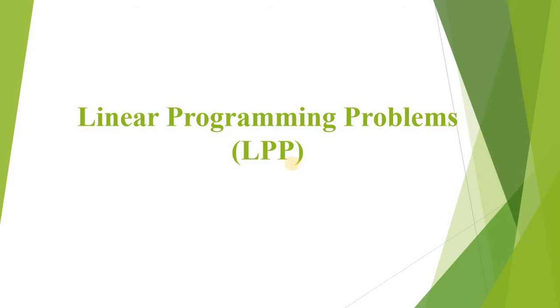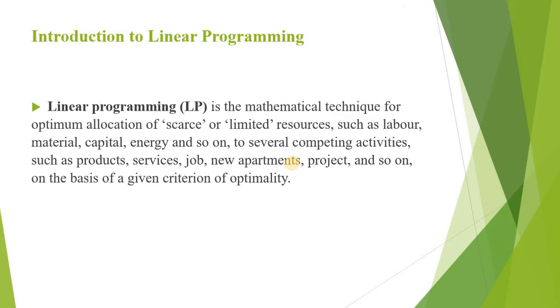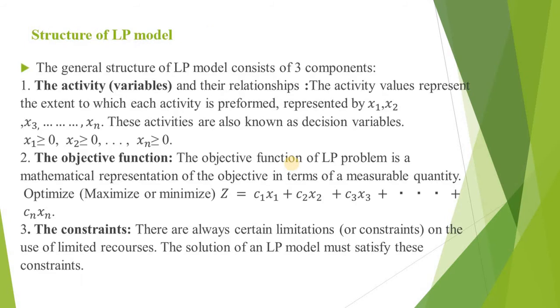An optimization problem may involve finding maximum profit, minimum cost, or minimum use of resources. A special but very important class of optimization problem is the linear programming problem. Constrained optimization problems have three major components: decision variables, objective functions, and constraints.